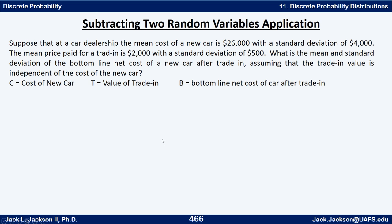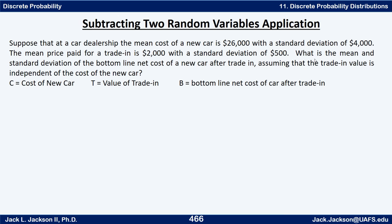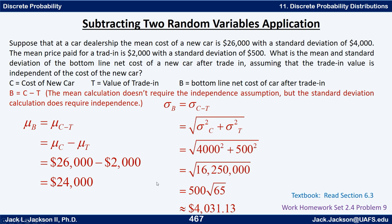For a real-world example: at a car dealership the mean cost of a new car is $26,000 with standard deviation $4,000, and the mean trade-in value is $2,000 with standard deviation $500. We want the mean and standard deviation of the net cost B equals C minus T, assuming the trade-in value is independent of the new car cost. Note that the mean calculation does not require the independence assumption, but the standard deviation calculation does.